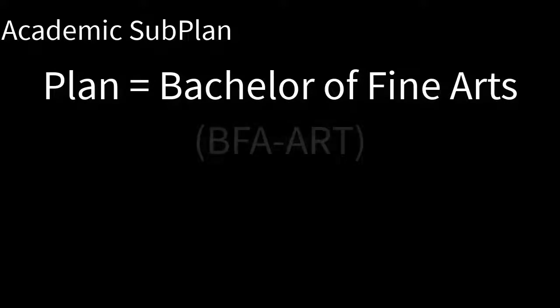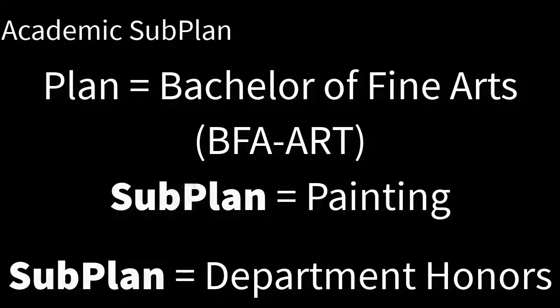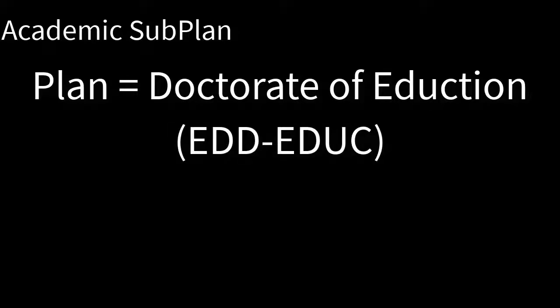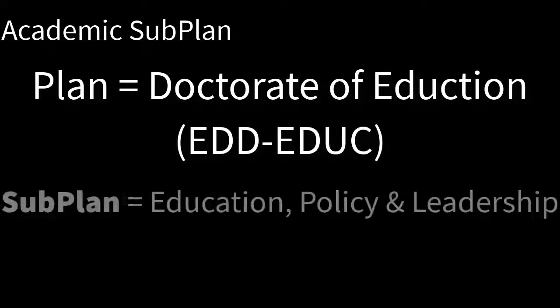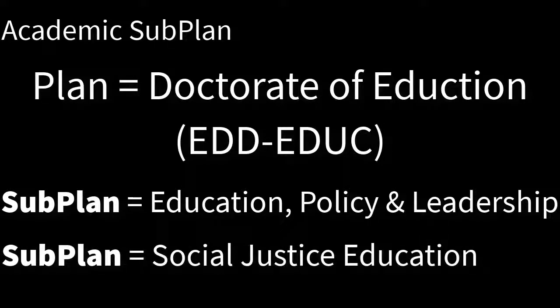Subplan. This delineates further specialization in the Academic Plan. For example, the Academic Plan may be a Bachelor of Fine Arts degree — BFA Art — with a Subplan of Painting, or a Subplan of Department Honors. The Academic Plan may be a Doctorate in Education, EDD EDUC, with a Subplan of Education Policy and Leadership, or Social Justice Education. Additionally, at the graduate level, a Subplan is sometimes used to differentiate the off-campus program part of their Academic Plan. Note: there can be various Academic Plans, and there may or may not be Subplans.